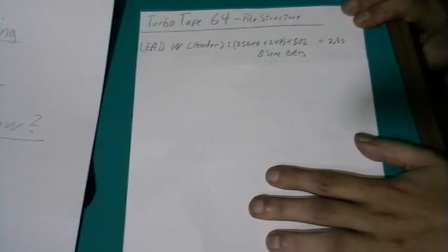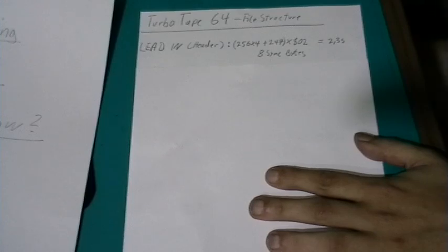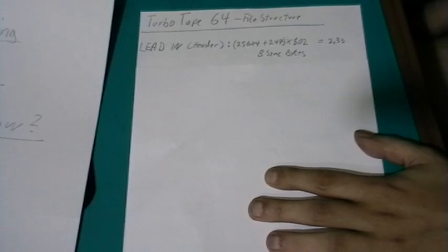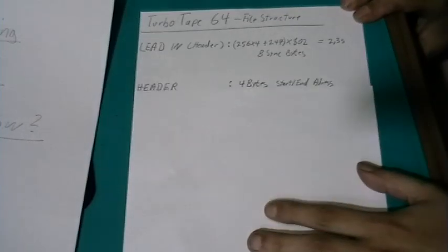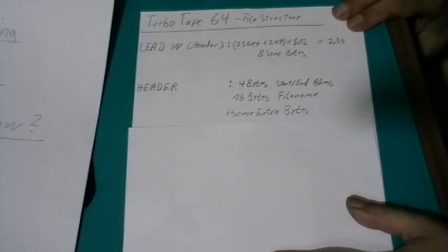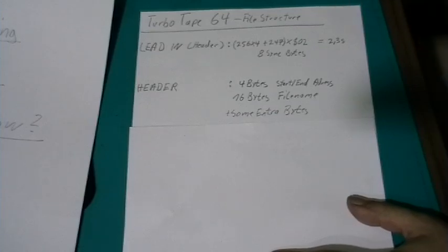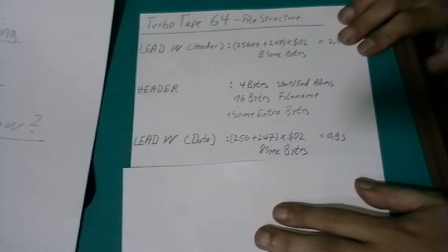We have a lead in for the header. It's 4 times 256 plus 247 hexadecimal 02 for about 2.3 seconds followed by 8 sync bytes. After that we have a header with 4 bytes for the start and end address, 16 bytes for a filename, and some extra bytes indicating if the file is relocatable in memory or something like that.